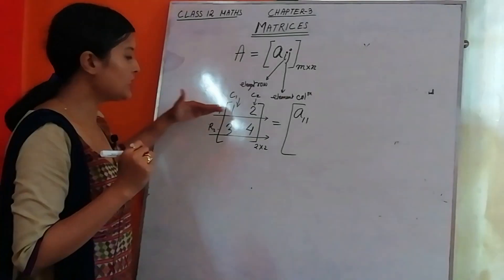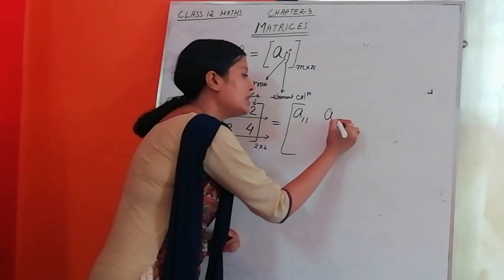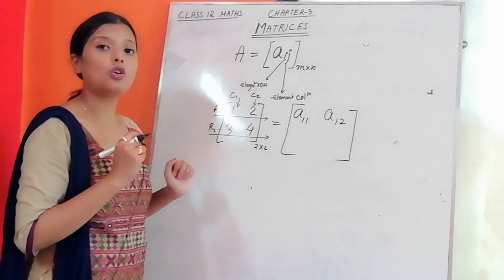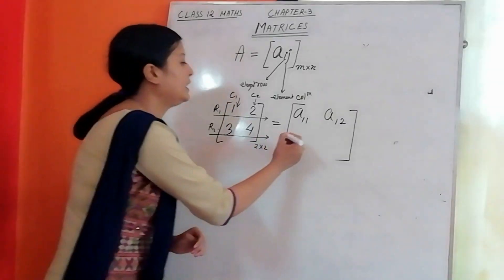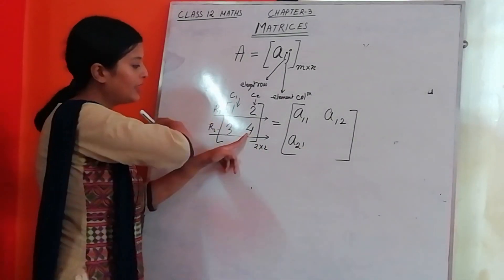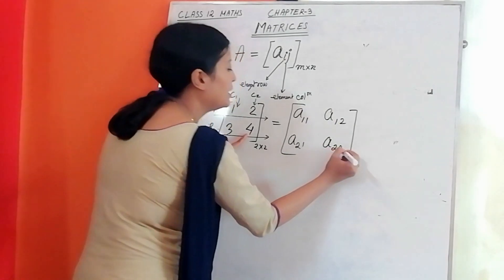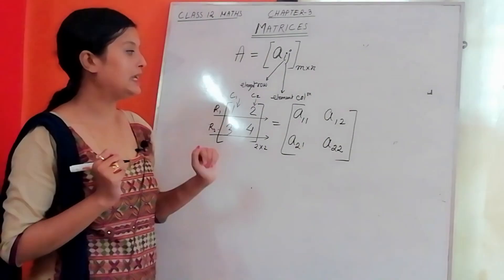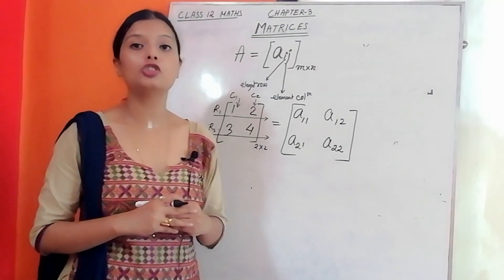The element in the second row and first column is written as A21. The element in the second row and second column is written as A22. This is how we represent the position of elements in a matrix using the notation A_ij, where i is the row and j is the column.